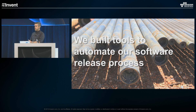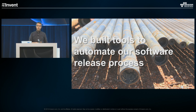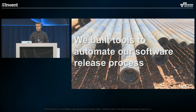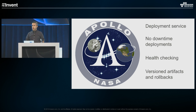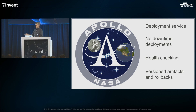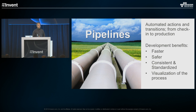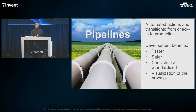Going back to software delivery — many years ago we started building our own tools because we had unique infrastructure requirements and were doing these things before many of the tools you can now consume even existed. Two key internal tools: Apollo is a deployment tool used by almost every Amazon developer deploying code onto physical or virtual servers, with capabilities like zero downtime deployments, health checking, version artifacts, and rollbacks. Pipelines is our internal continuous delivery tool, plugs directly into Apollo, and gives developers the ability to automate from check-in to production deployment, with gates, testing, build phases, and multi-environment deploys.